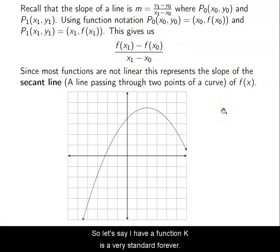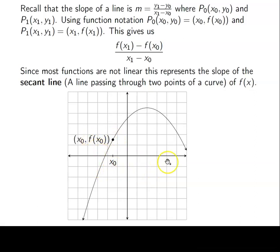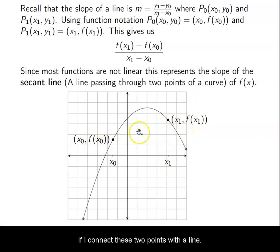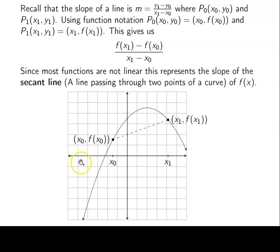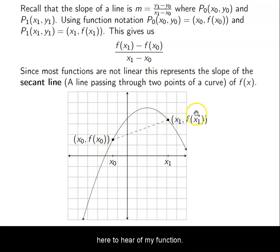So let's say I have a function — just a very standard parabola. If I let this be x0, then this point has an output of f of x0. If I have a second point x1, its output is f of x1. If I connect these two points with a line, then the slope of that line is f of x1 minus f of x0 over x1 minus x0. So that's what this represents — it's the rate of change from here to here of my function.